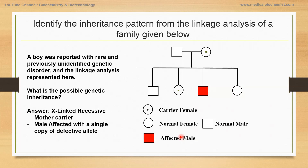With that, I'd like to return to the question I had previously, where the mother was a carrier and one child — a boy — was affected, and one girl was a carrier. Based on this, the daughter is just a carrier. Therefore, it is an X-linked recessive disorder.